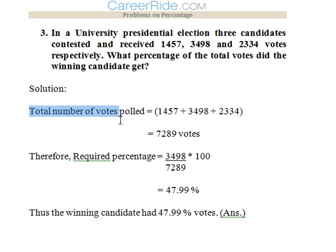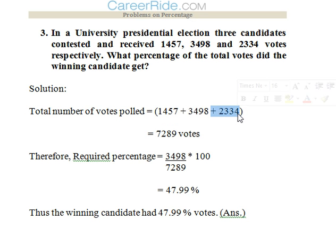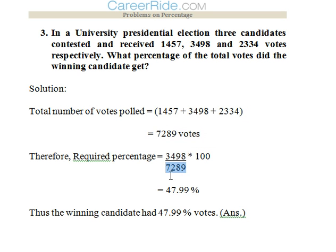The total number of votes polled were 1457 + 3498 + 2334, which equals 7289. The required percentage: 3498 divided by 7289 multiplied by 100 equals 47.99%. So the winning candidate had 47.99% of the votes.